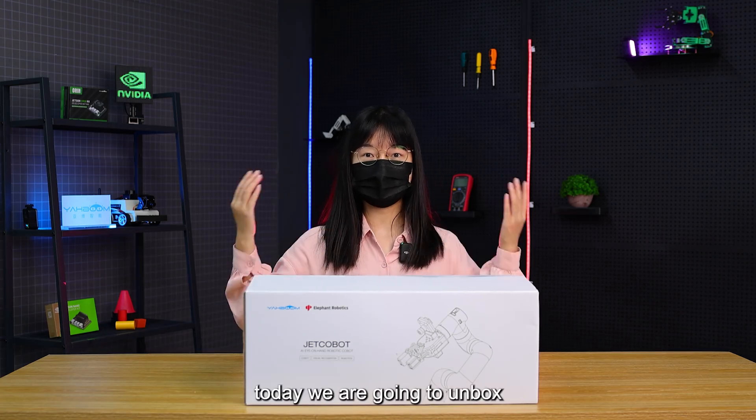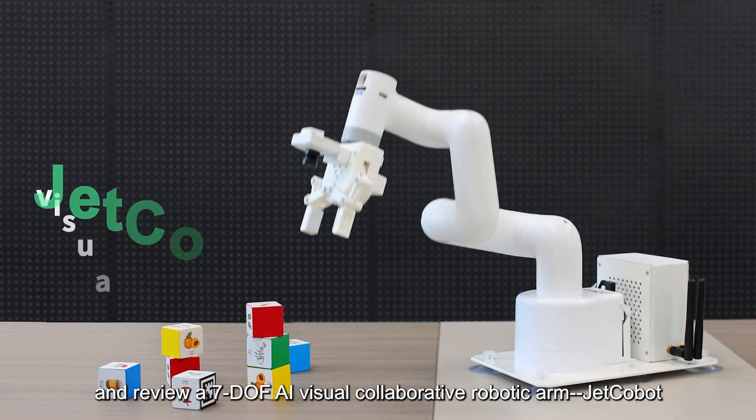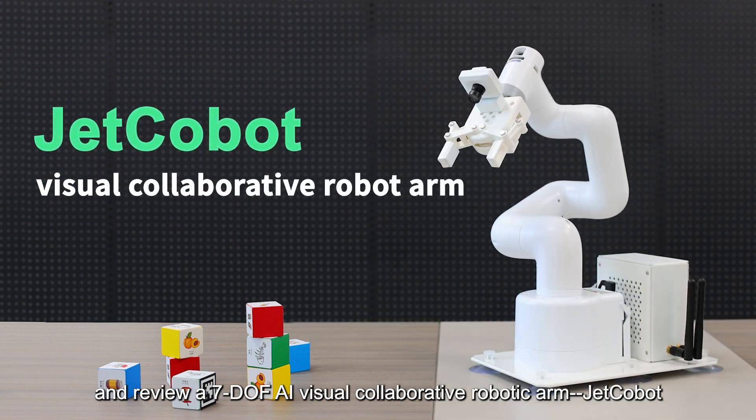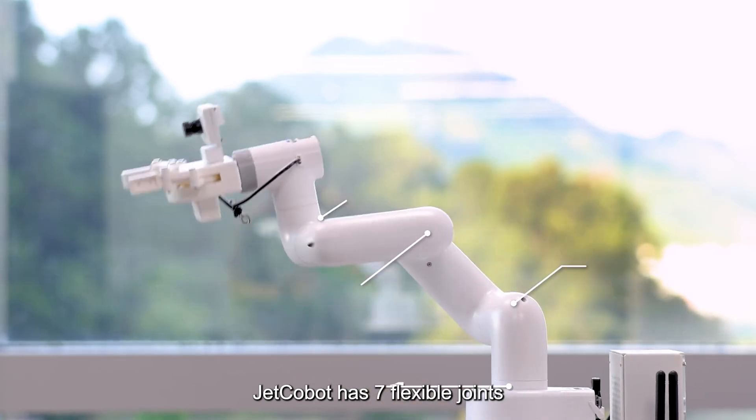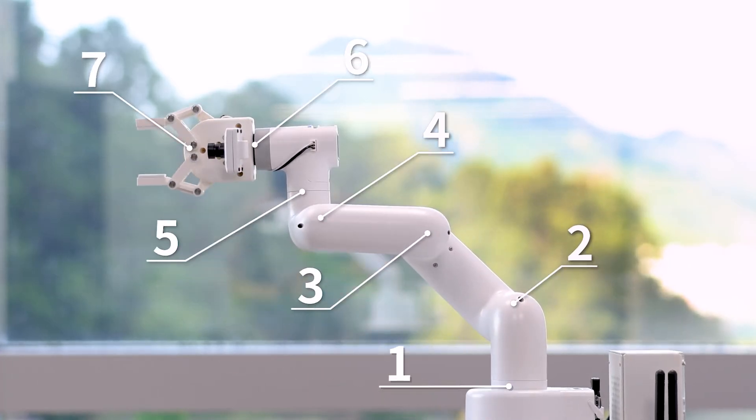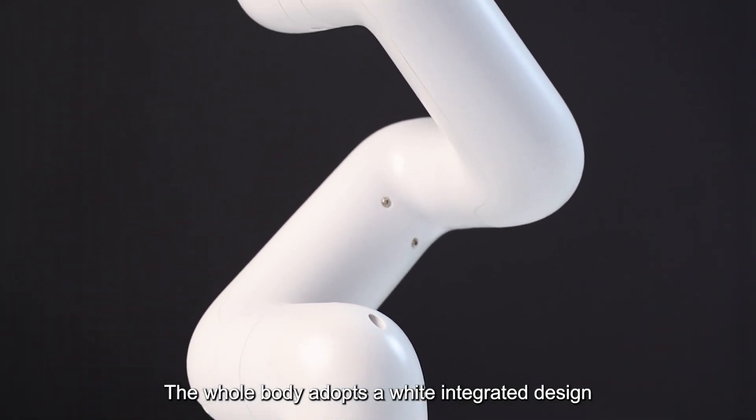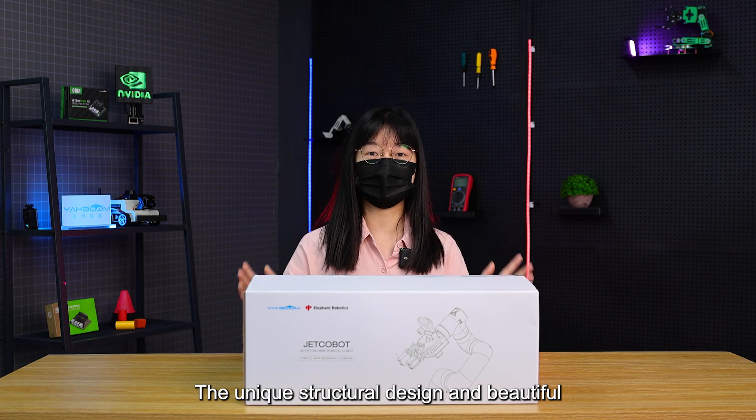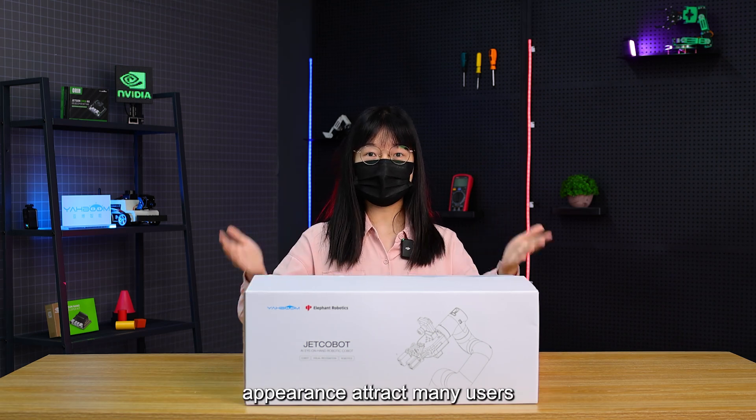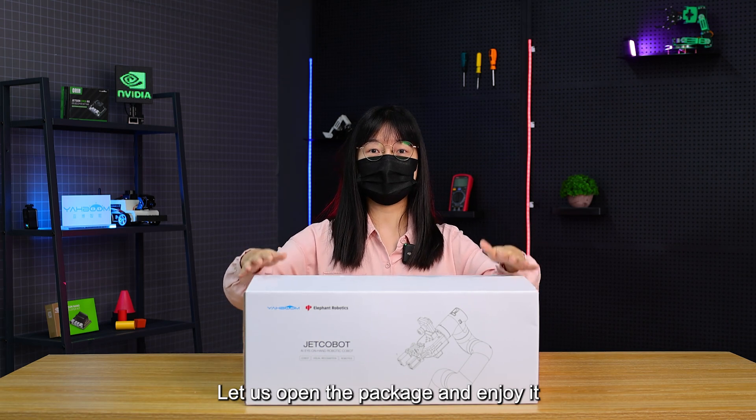Hello everyone! Today we are going to unbox and review a 7-DOF AI Visual Collaborative Robotic Arm JetCobot. JetCobot has 7 flexible joints. The whole body adopts a wide integrated design. The unique structural design and beautiful appearance attract many users. Let us open the package and enjoy it.